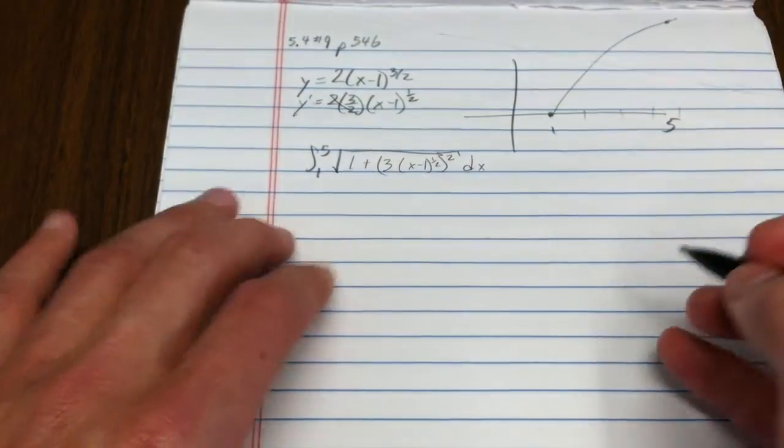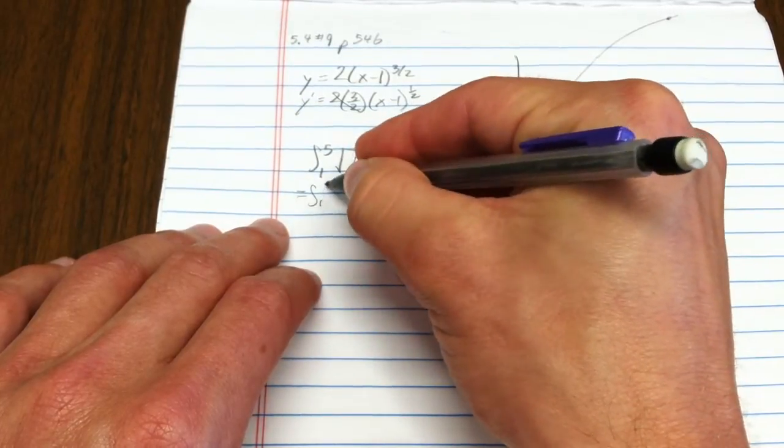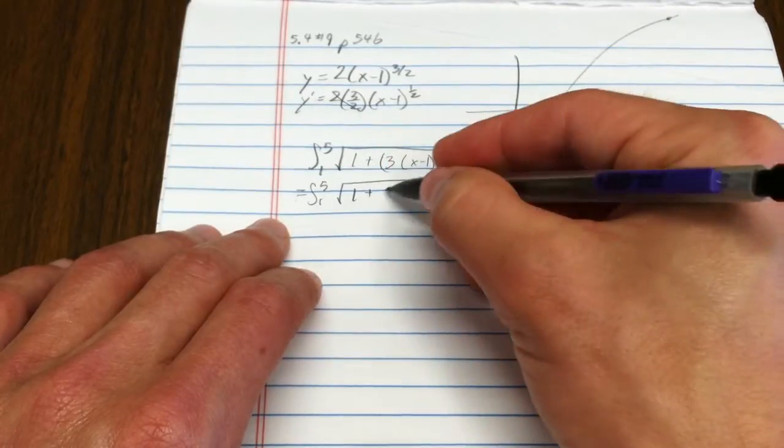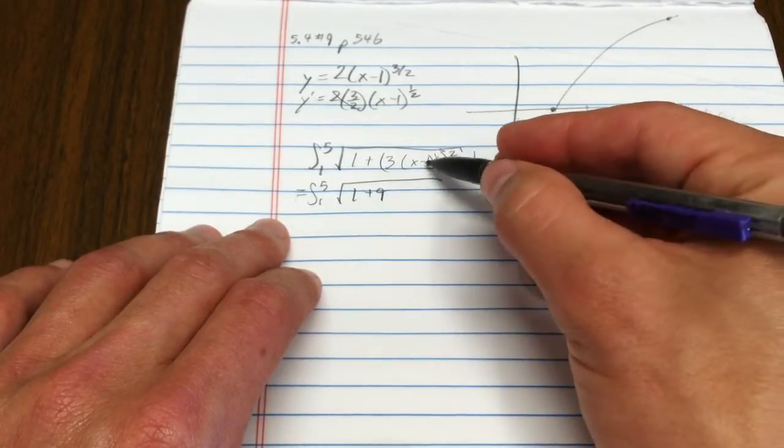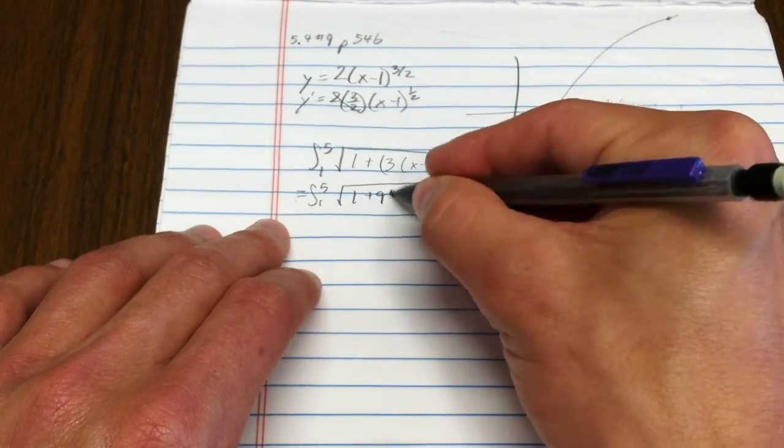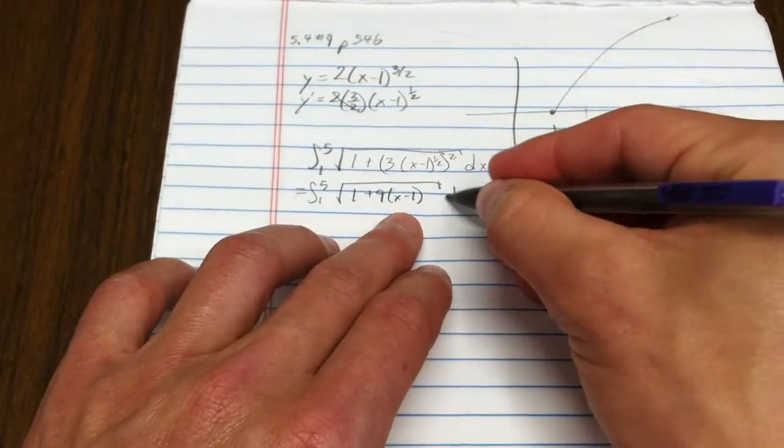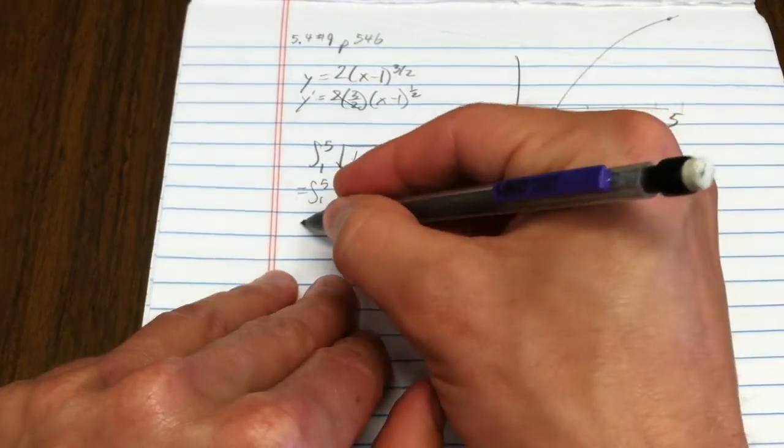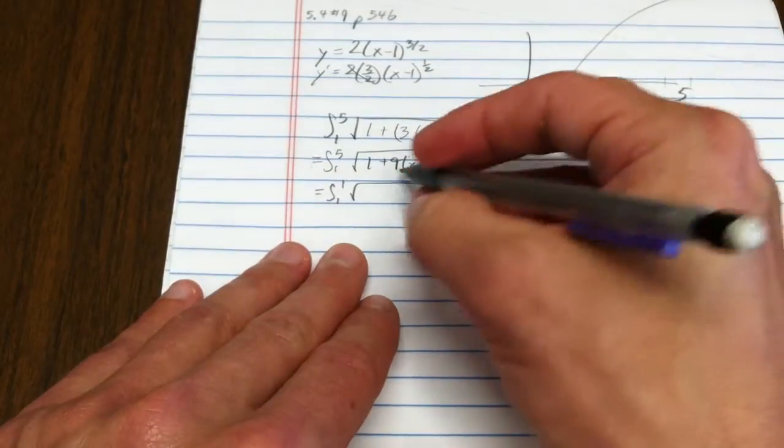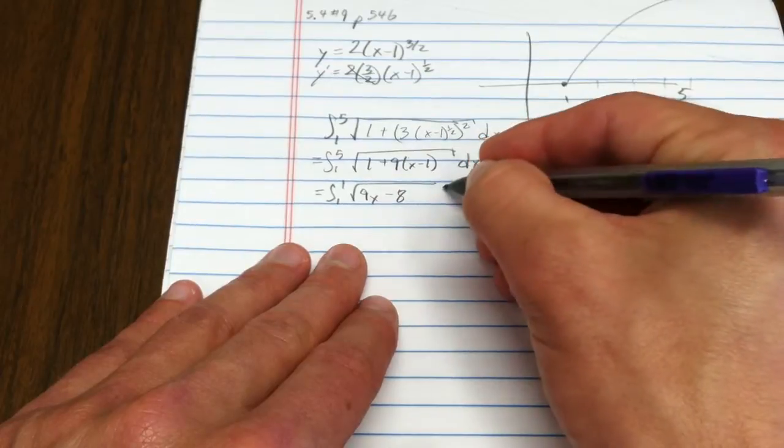That integral becomes the square root of 1 plus 9(x - 1). When I square that, that's 1 plus 9, and the 1/2 and the squared cancel, so 9x - 1. We could simplify this as the integral from 1 to 5 of the square root of 9x - 8 dx.